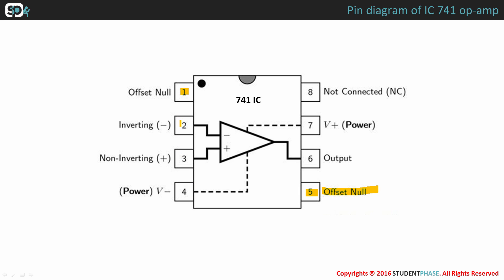Pin 2 is inverting input terminal. Pin 3 is non-inverting input terminal. Pin 4 is for negative supply voltage VEE. Pin 7 is for positive supply voltage VCC.